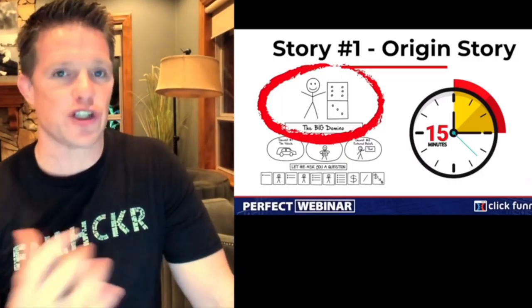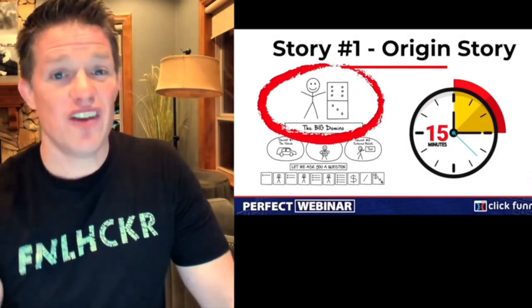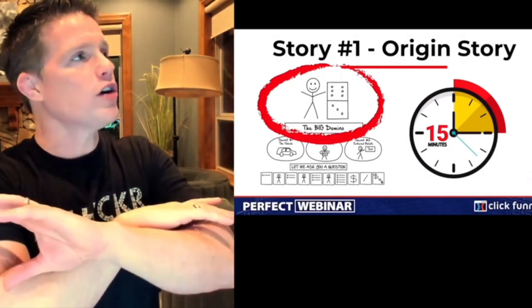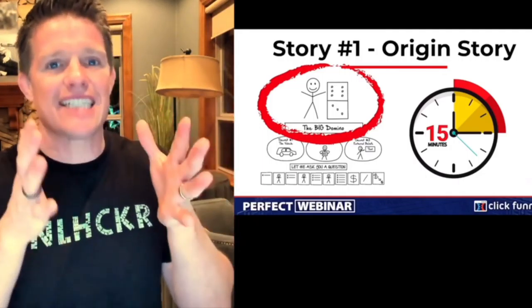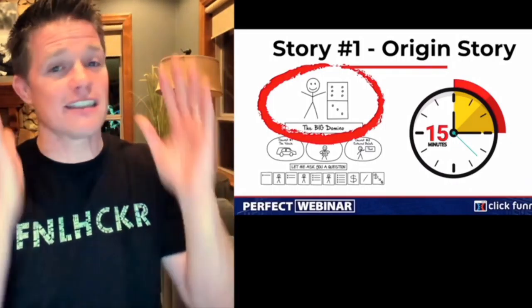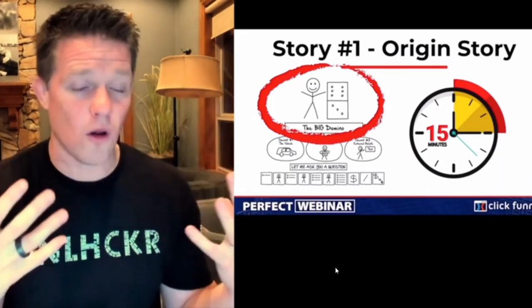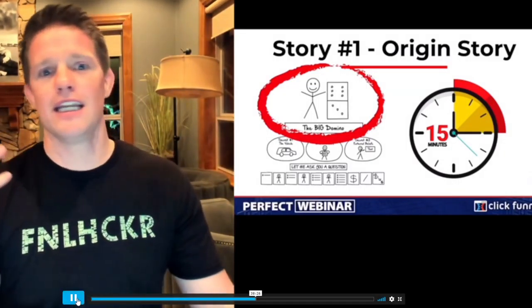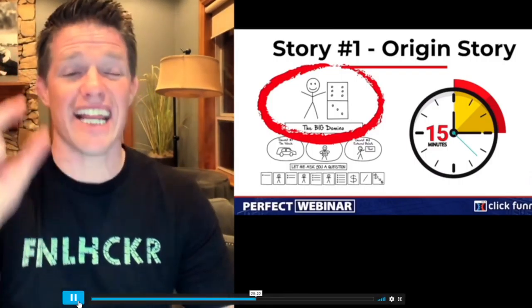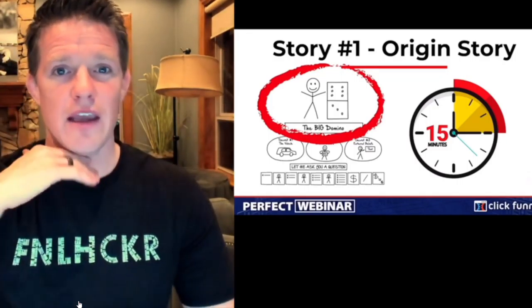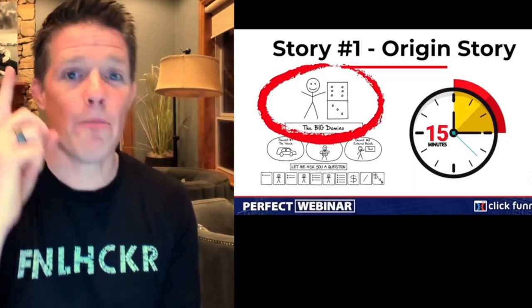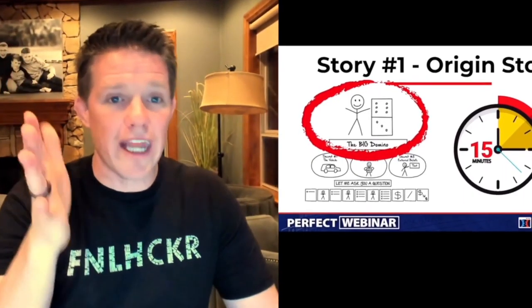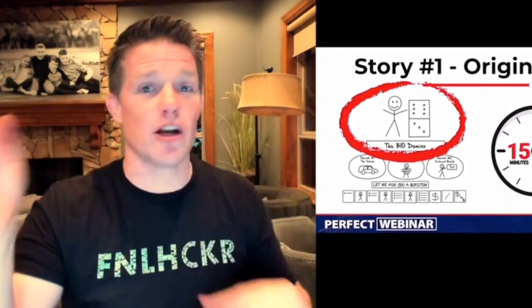Russell explains the 'big domino' concept: 'In every sales presentation there's always one big domino you have to knock over — if you knock that one domino over, all your other concerns disappear. For me with ClickFunnels, I have to convince people that funnels are the fastest and best way to grow their company. If you're selling a ketogenic diet, you've got to convince them that a ketogenic diet is the thing that will actually help them lose weight. That's the big domino — that's all you have to convince people of.'